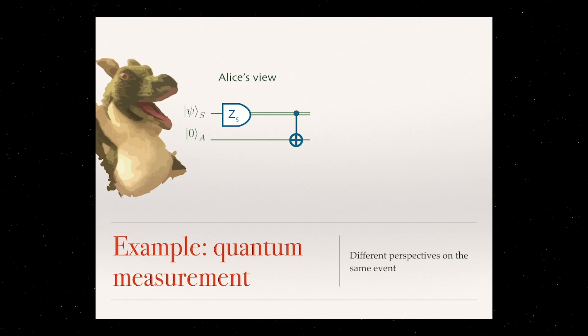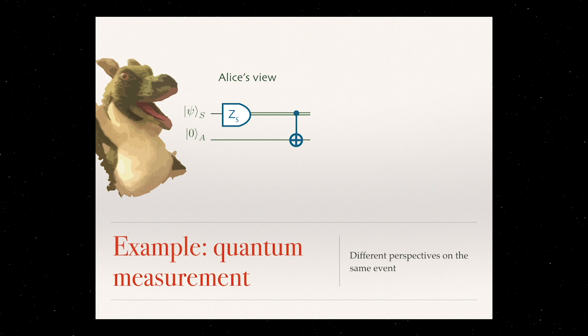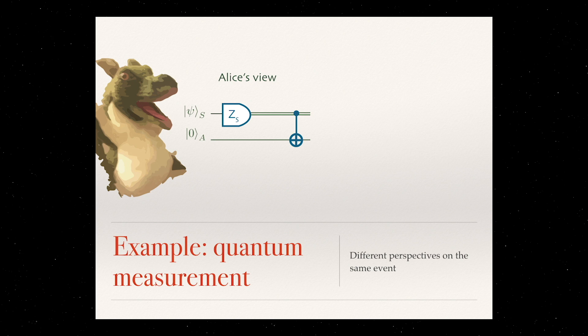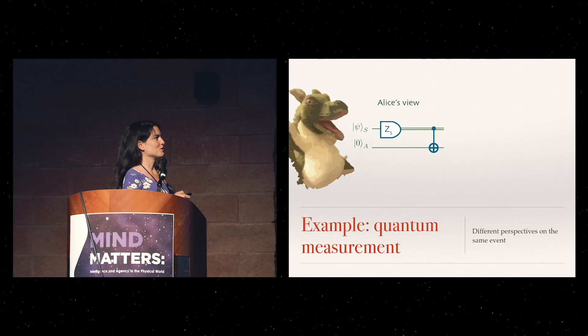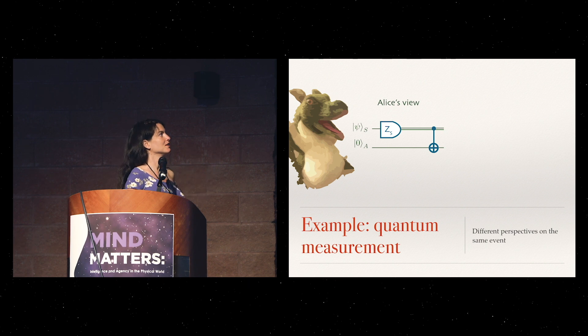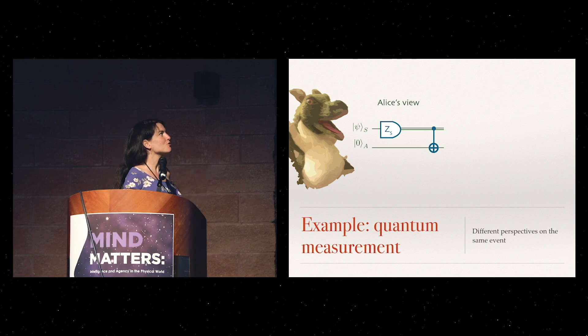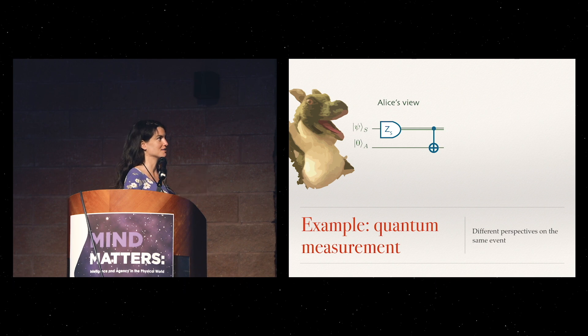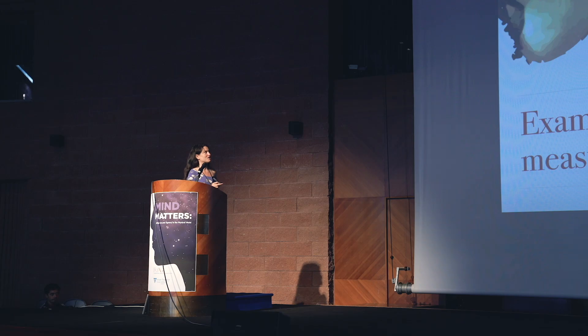One is just a simple quantum measurement. Imagine that here there's a system in some state psi that Alice wants to measure. This is the register of her memory where she'll later keep the outcome of this measurement. From her perspective, she knows that she's a big quantum system interacting with this other quantum system. But for practical purposes, she can model this measurement process as something that in the end will produce a classical output, which she later copies to her memory.